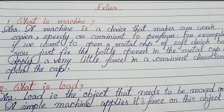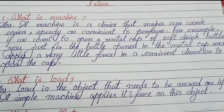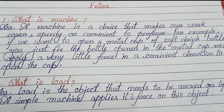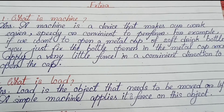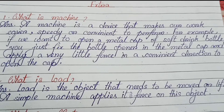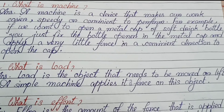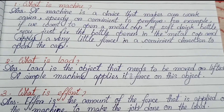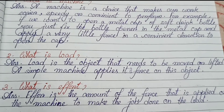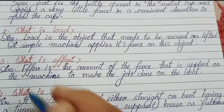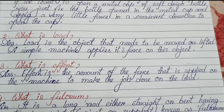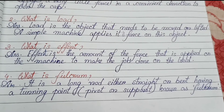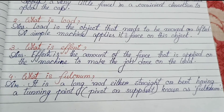Extra question answers. One: What is a machine? A machine is a device that makes our work easier, speedy or convenient to perform. For example, to open a metal cap of a soft drink bottle, you fix the bottle opener on the cap and apply very little force in a convenient direction. Two: What is load? Load is the object that needs to be moved or lifted; a simple machine applies its force on this object. Three: What is effort? Effort is the amount of force applied on the machine to get the job done on the load. Four: What is fulcrum? It is a long rod either straight or bent having a turning point, pivot or support, known as fulcrum.